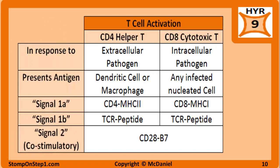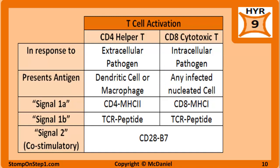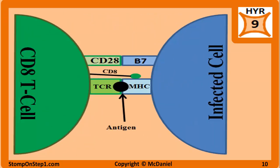CD8 T cells are activated by an interaction with a cell that has an intracellular infection — this infected cell can be of almost any type. The antigen is presented on the surface MHC1 of the infected cell. To become active, the CD8 cell must recognize the antigen and the MHC. CD8 cells also require the same co-stimulatory signals as CD4 cells — the T cell receptor recognizes the antigen and MHC, while the CD28 surface marker on the T cell binds the B7 surface marker on the infected cell, providing the co-stimulatory signal.